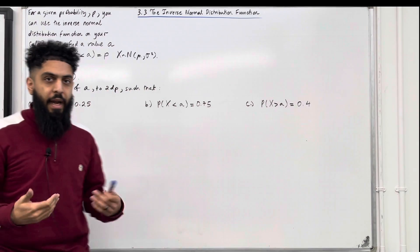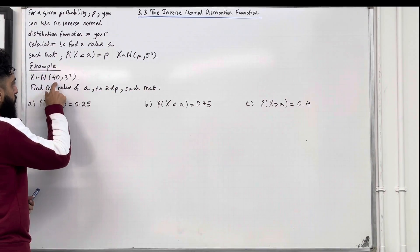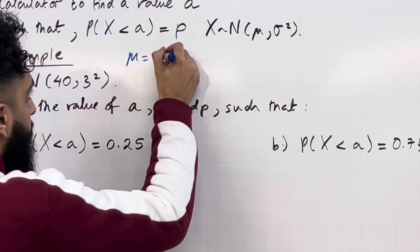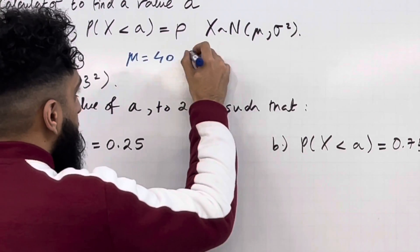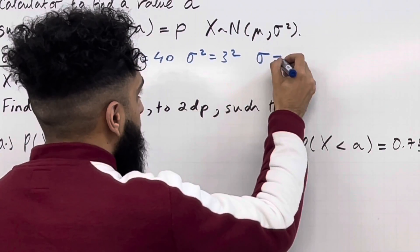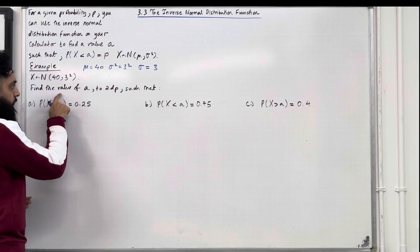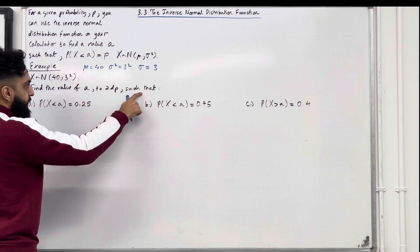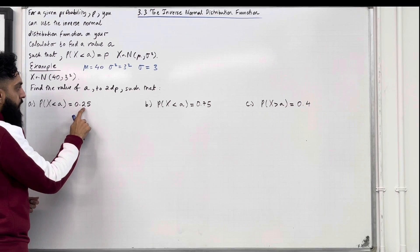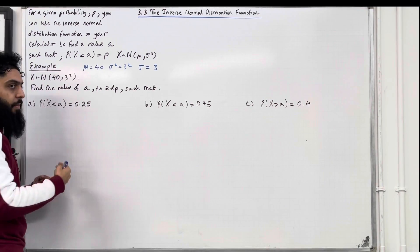In my example, X takes on a normal distribution with mean 40 and variance 3 squared. So we know that the mean mu is equal to 40, and the variance sigma squared is equal to 3 squared. Hence the standard deviation sigma is the square root of 3 squared, which is 3. Find the value of A to two decimal places such that Part A: probability X is less than A is equal to 0.25. I'm going to illustrate A and 0.25 on a bell-shaped curve.